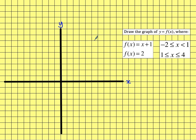Draw the graph of y equals f(x), where f(x) equals x plus 1 for the domain of minus 2 to 1, and f(x) equals 2 for values from 1 to 4. To graph this, I need to think of this as y equals x plus 1, where y is going to be the output. So I'm going to draw the graph of y equals x plus 1 for values from minus 2 to 1.